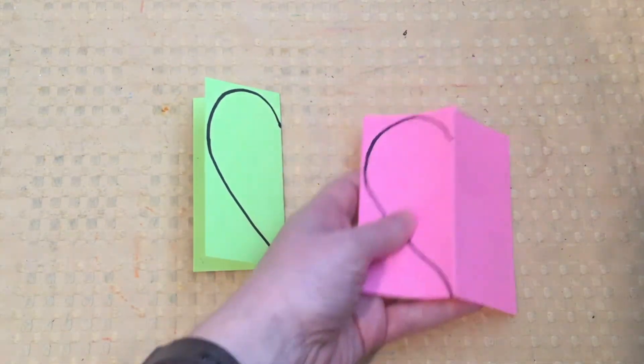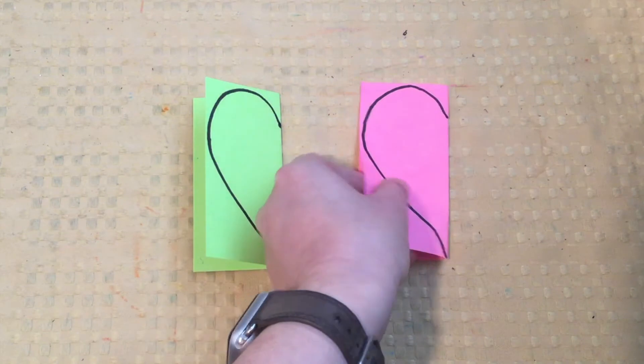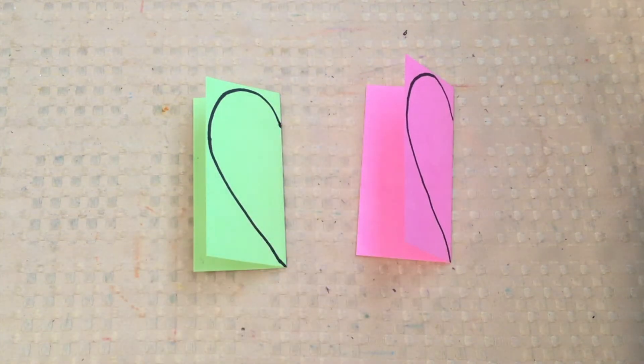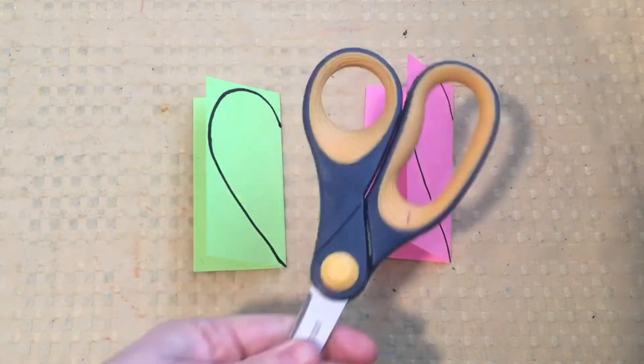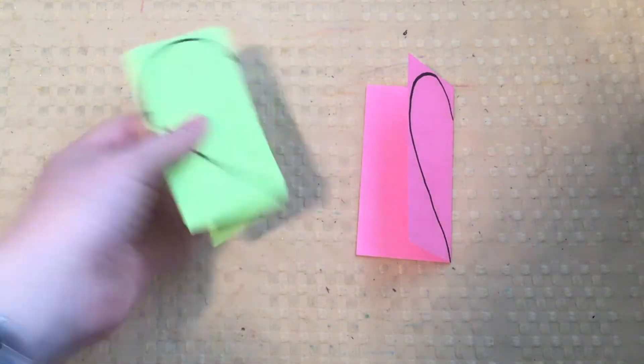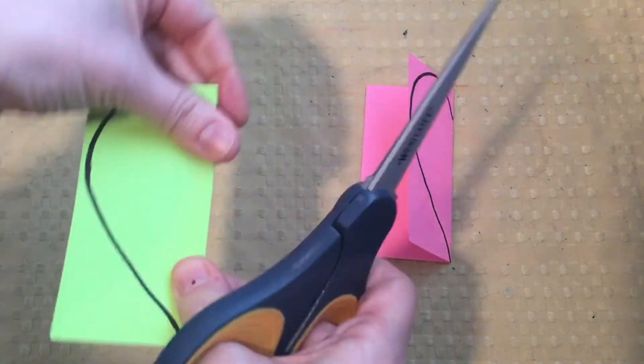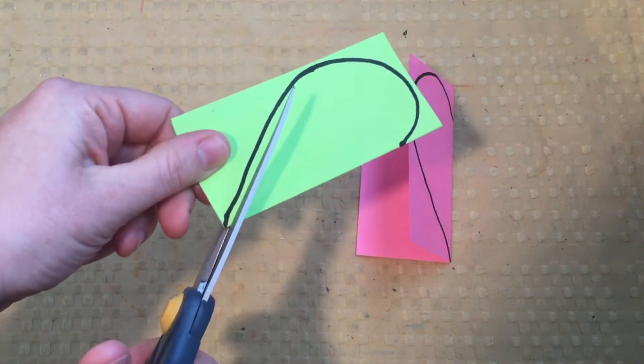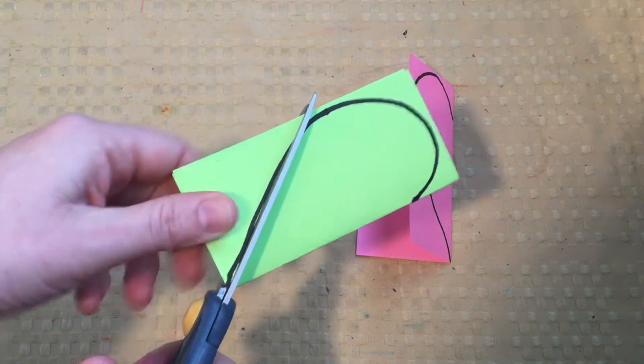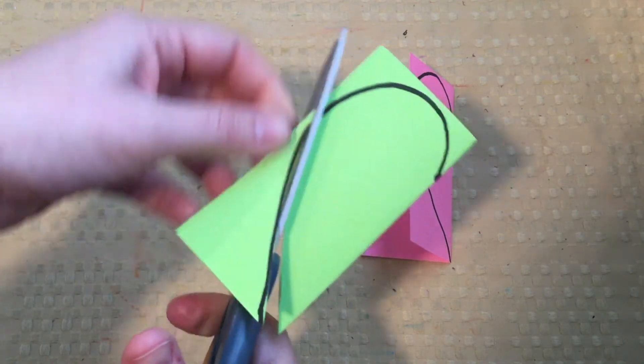Once I have my half of heart shape on the folded side, I can then cut out my hearts. To cut out my heart, I'm going to hold my paper so it's tight together and I'm going to cut the line that I made for my heart, as carefully as I can.